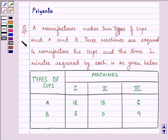Hi and how are you all today? The question says the manufacturer makes two types of cups, A and B. Three machines are required to manufacture the cups and the time in minutes required by each is given to us in this table.